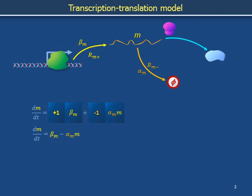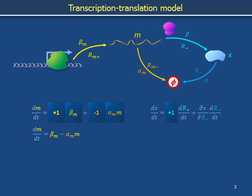Ribosomes translate messenger RNA with rate coefficient beta. The amount of protein in the cell is x, and r+ is the number of translation events that have proceeded since a reference time. Protein is degraded with rate coefficient alpha, and the number of protein degradation events since a reference time is r−. The time derivative of protein x is owing in part to translation events and owing in part to protein degradation. The partial change in protein level owing to a translation event is a gain of one copy of protein. If the number and reactivity of ribosomes is assumed constant, the law of mass action prescribes a rate of beta times the messenger RNA level. The partial change owing to a protein degradation event is a loss of one, with the law of mass action prescribing one power of x. So dx/dt = beta × m − alpha × x.